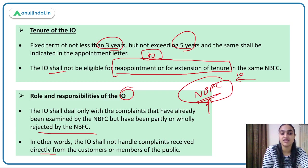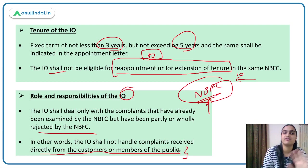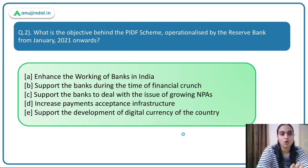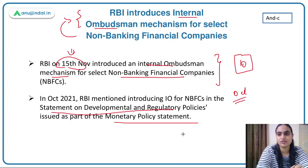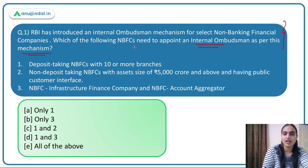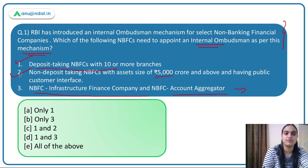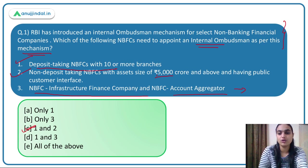The IEO will not handle complaints directly from customers or members of the public. First, the NBFC will try to address it on their platform, and if they don't resolve it, then the complaint will be escalated to the IEO. Coming back to our question: deposit-taking NBFCs and non-deposit-taking NBFCs meeting the thresholds have to appoint an IEO. NBFC Infrastructure Finance Companies and Account Aggregators are excluded. The answer is option C.